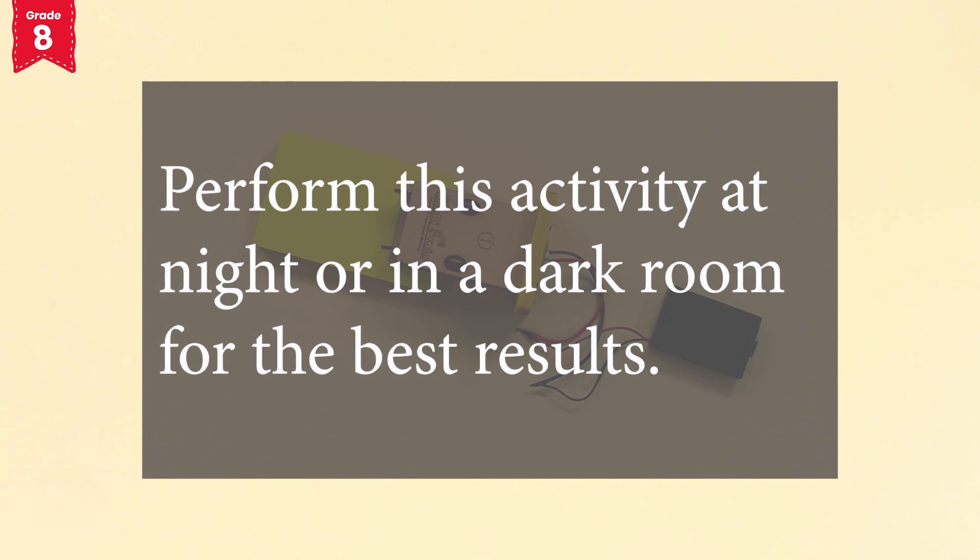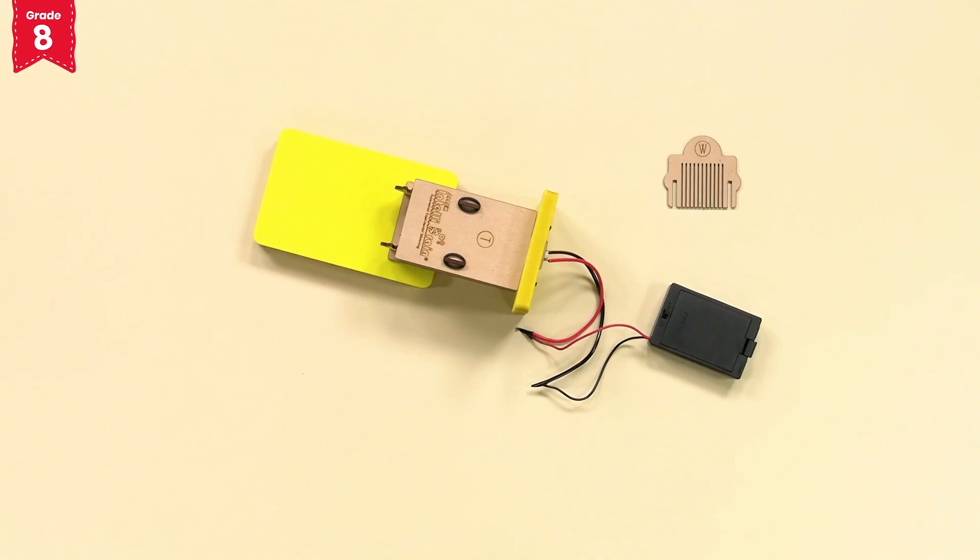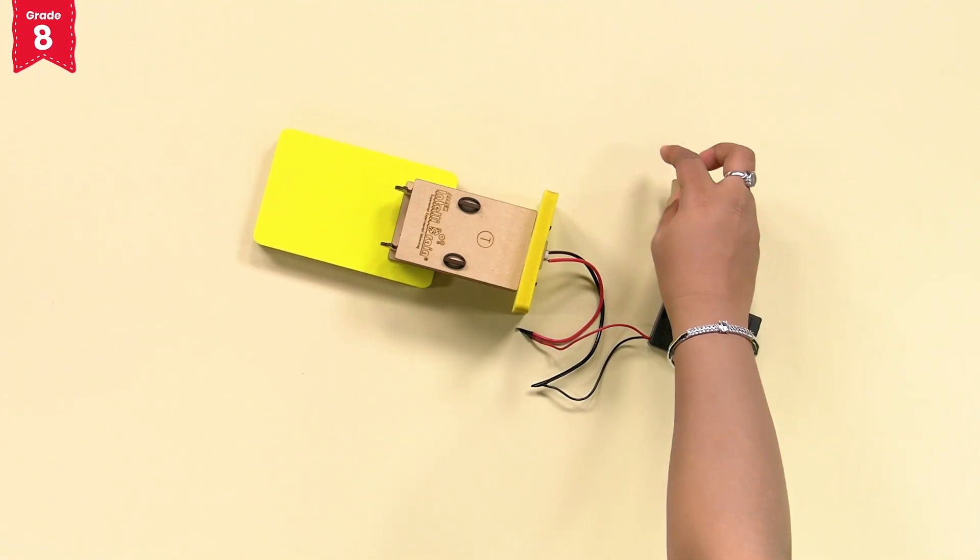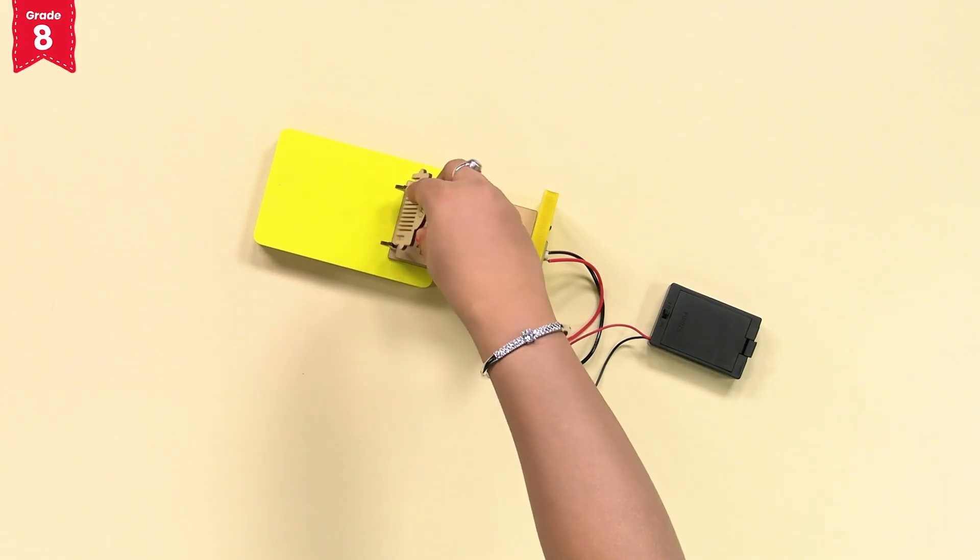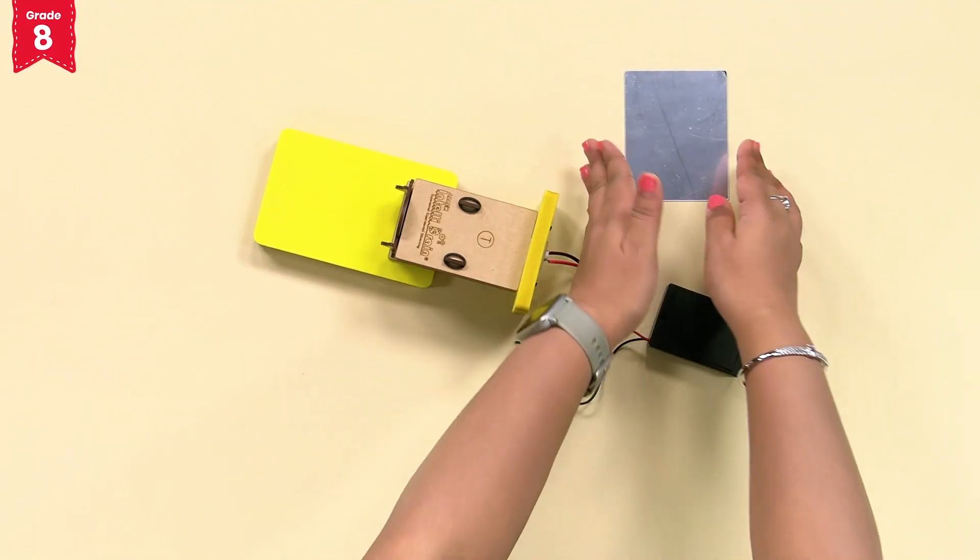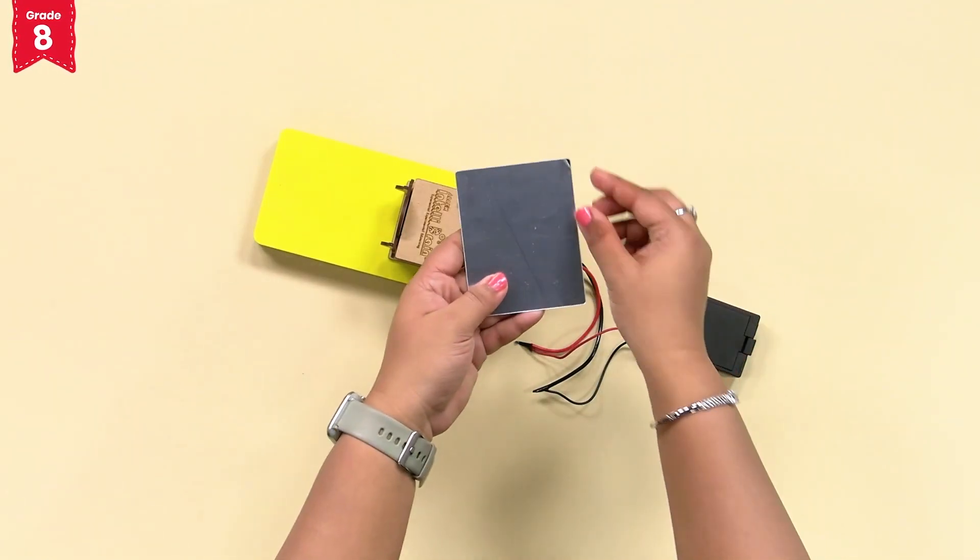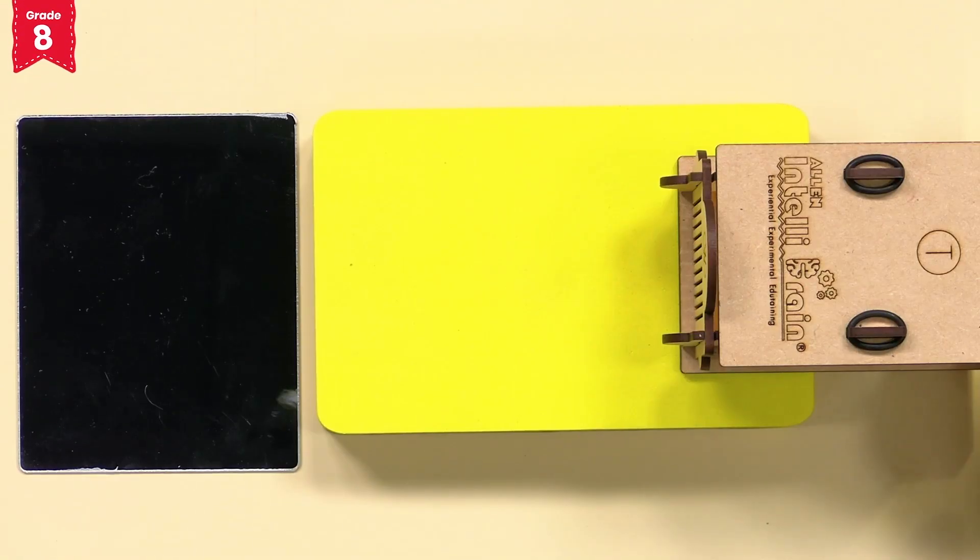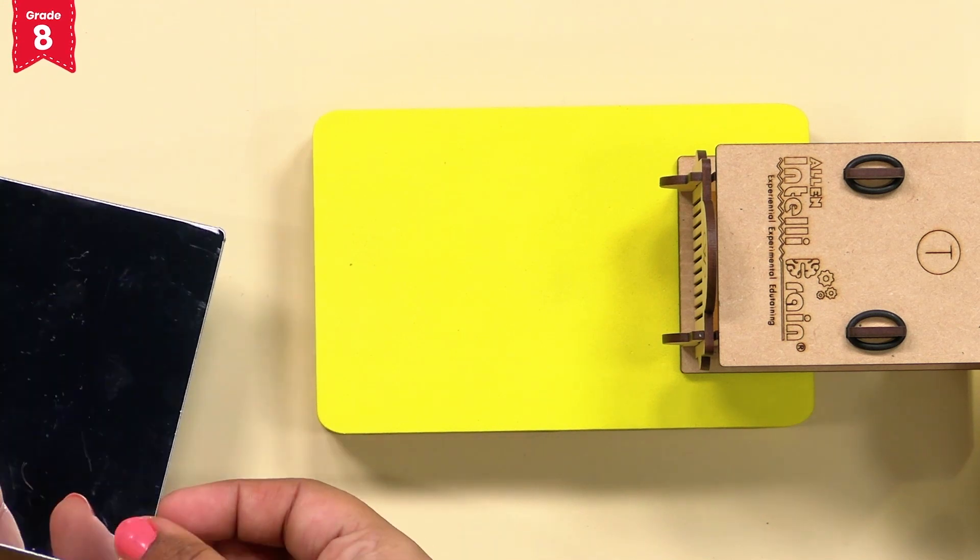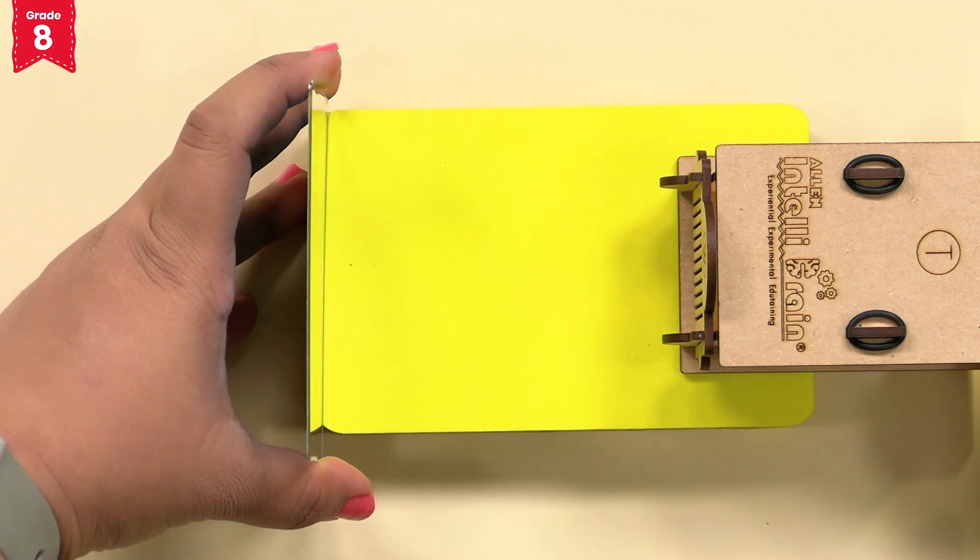Perform this activity at night or in a dark room for the best results. Now, take the split window W and insert it into the slits of L and R like this. Bring the mirror in front of the ray box and observe that the light gets reflected from the mirror. Can you see these reflected rays?